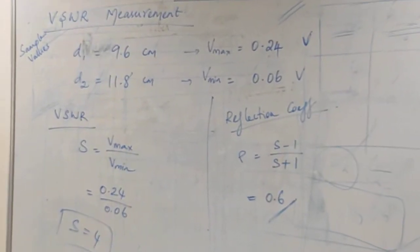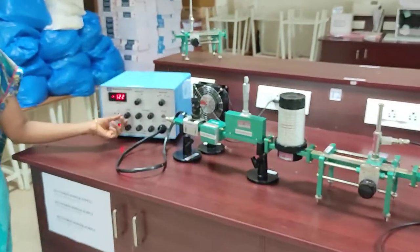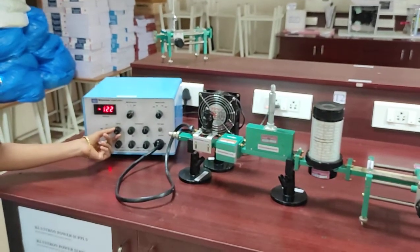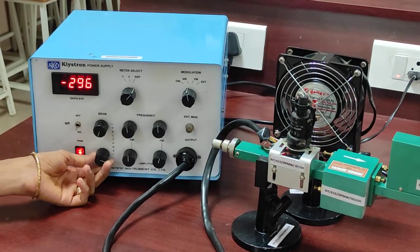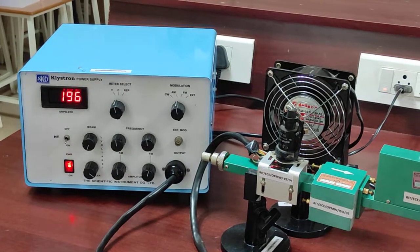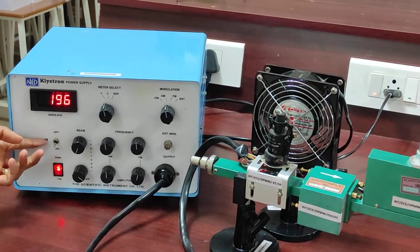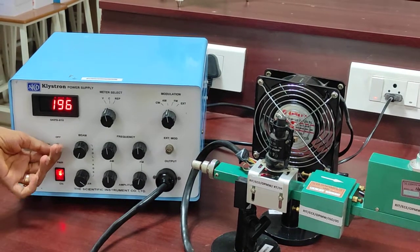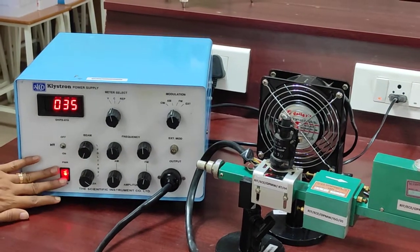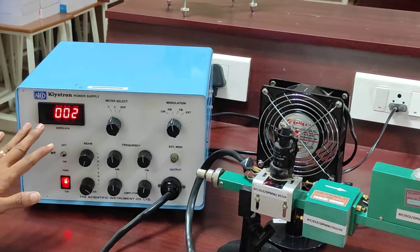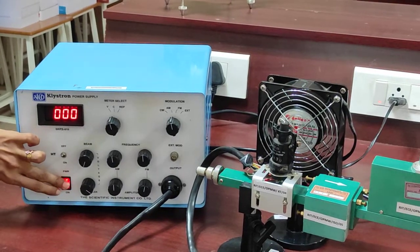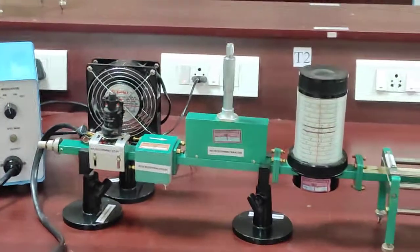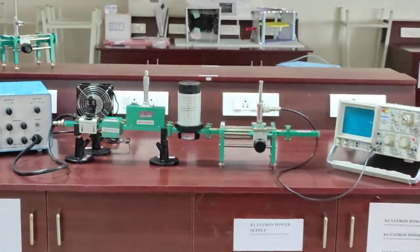And one more point I want to mention is that while switching off all the devices, you have to keep this beam voltage again to the minimum position and repeller voltage again to the maximum position. Keep this knob in V. First, you have to switch off this high tension knob. Wait for 2 minutes. It has to set to 0. Once if it got 0 value, then you power off this. These are the things you have to do. That is all. Thank you.